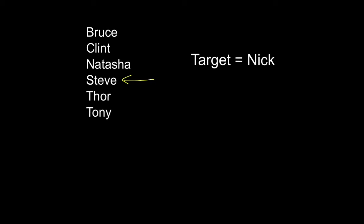In this example we're looking for Nick from the list, so we follow the same process. We've got six items, so the middle one would be in between Natasha and Steve, but we take Steve as the second value as being our middle one. Nick comes before there, so we look for values above it. We've got three values now, and Clint is the middle one. We take that as our search point. Nick comes after Clint, but after Clint there's only one value: Natasha. There's only one in the list so we have to stop, and it isn't Nick. So we know that Nick is not in the list.